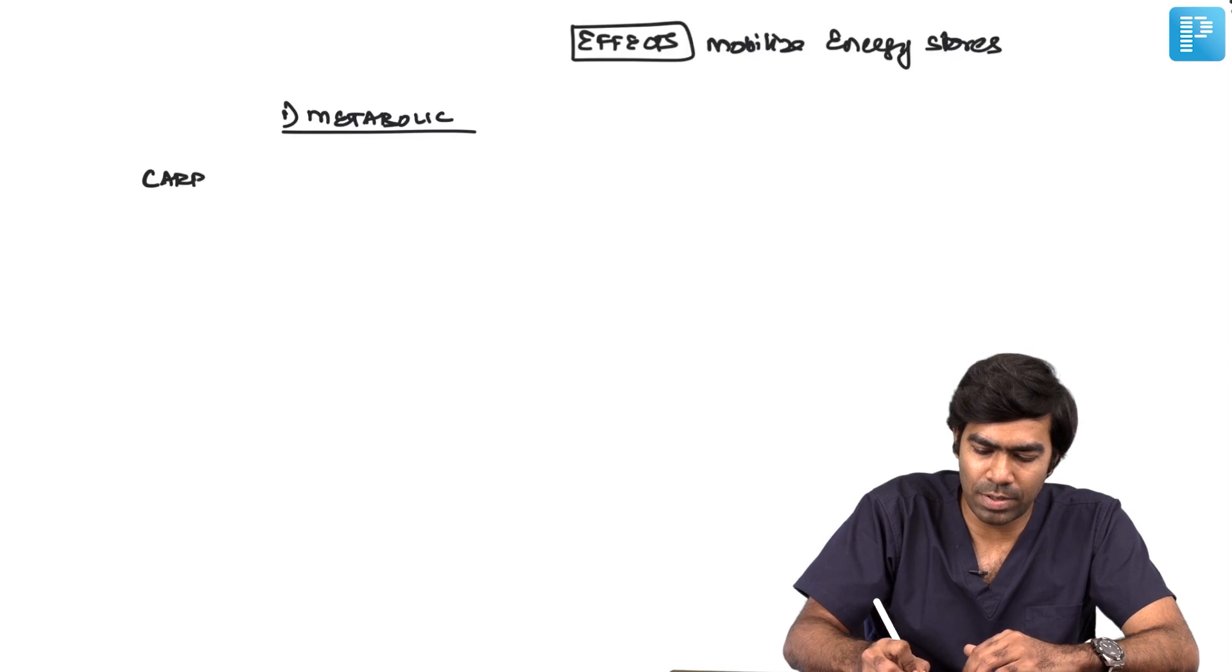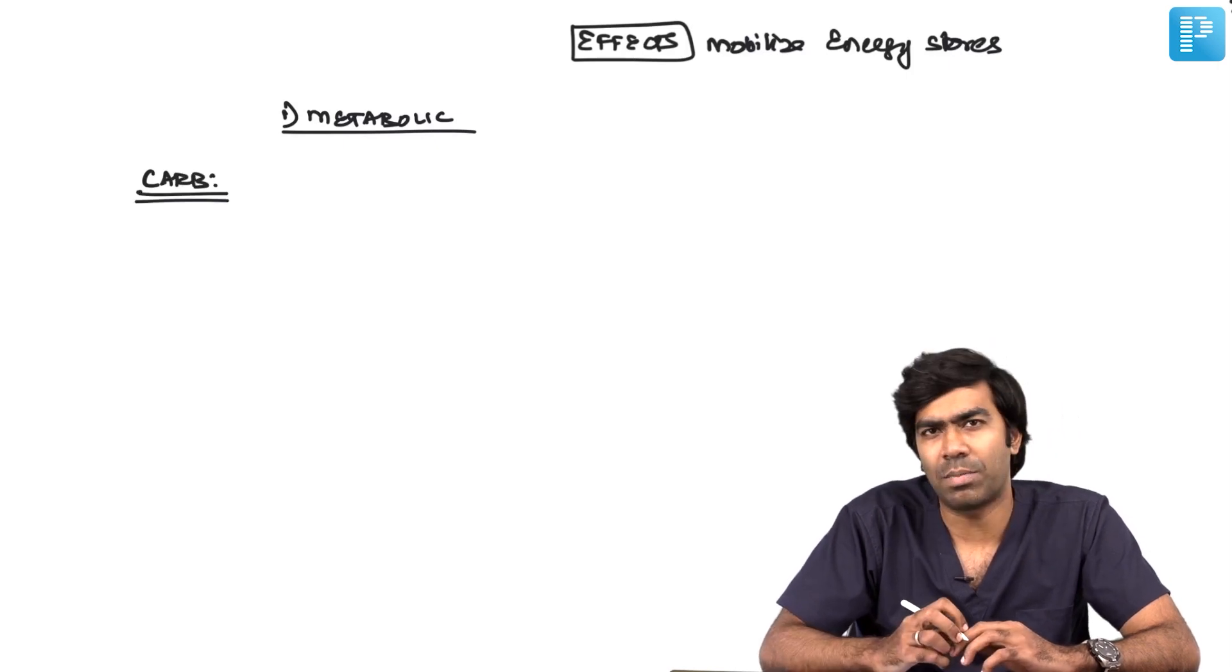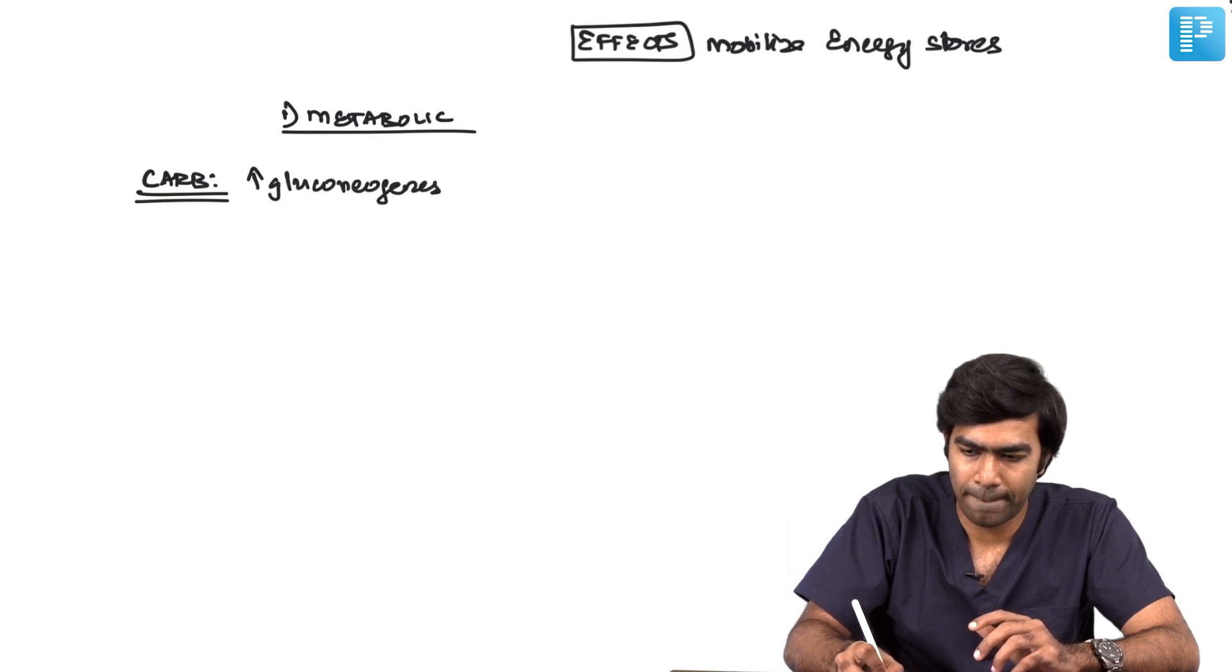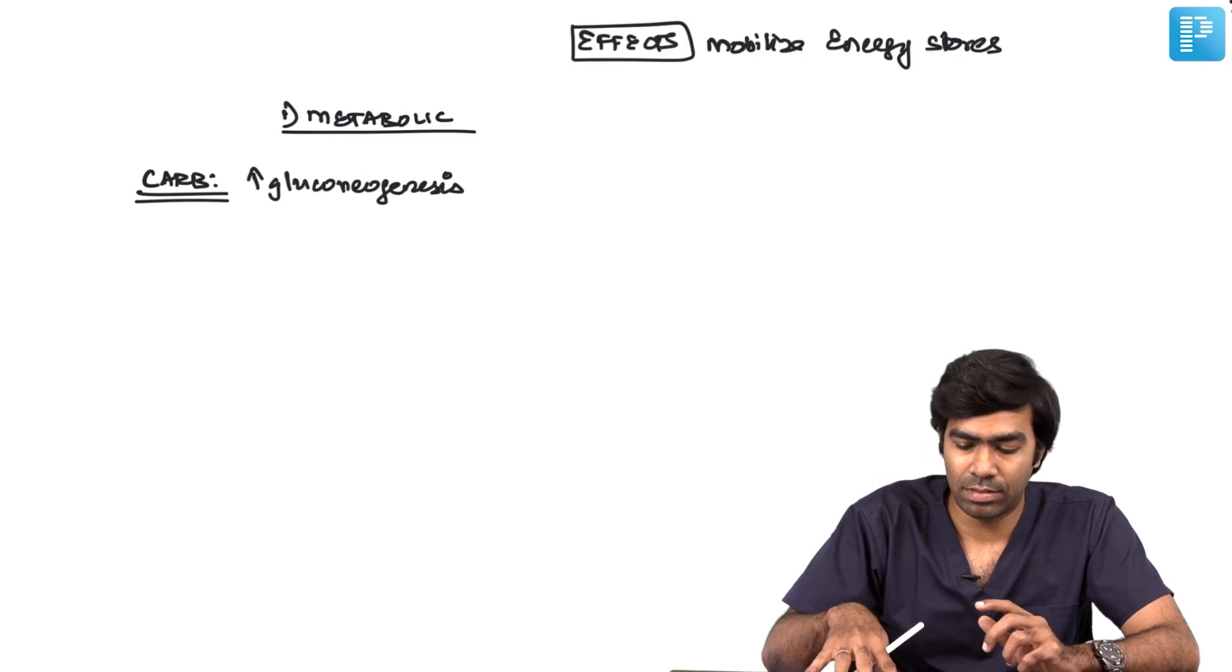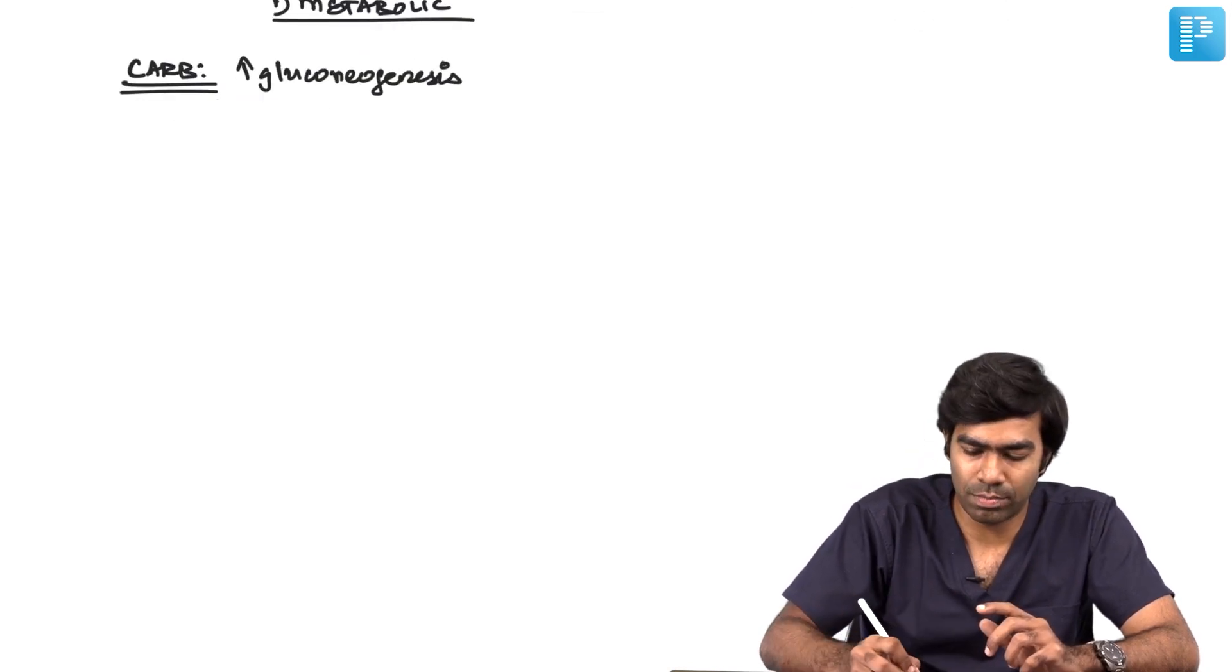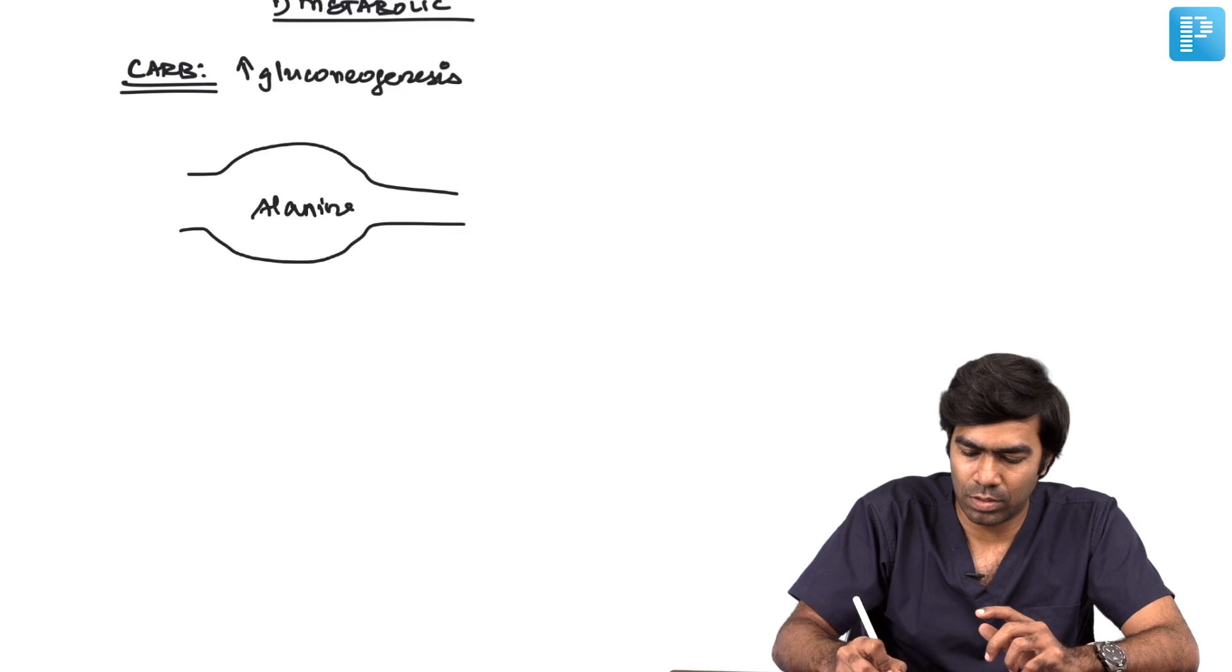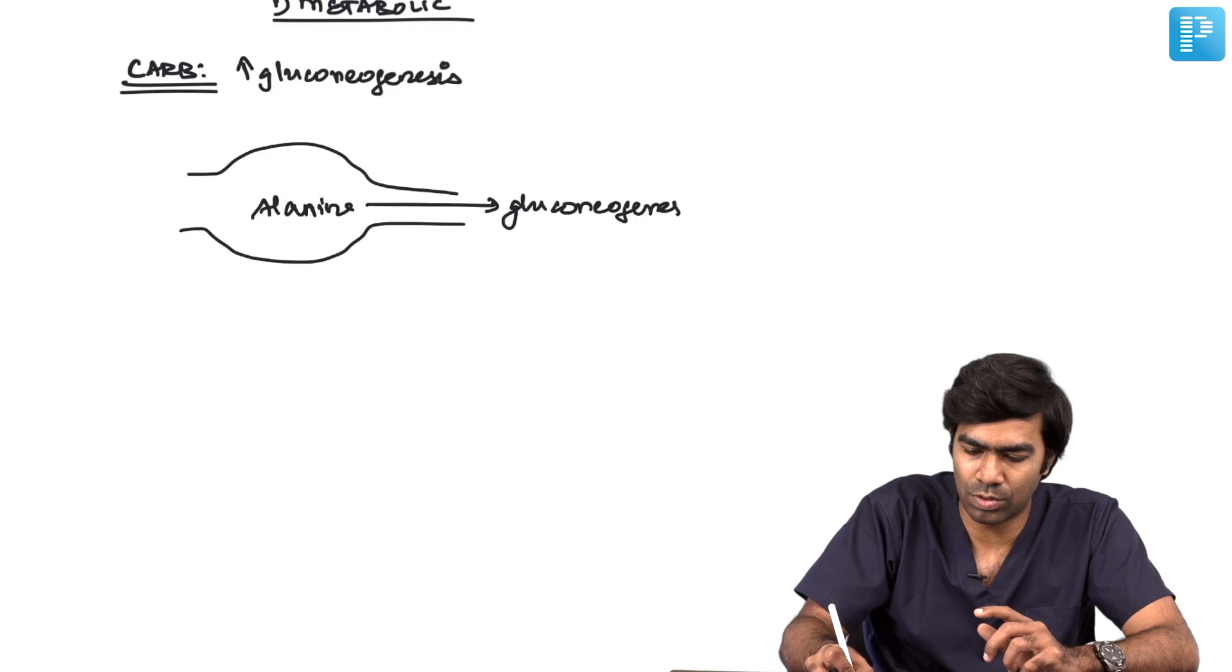Metabolic effects start with carbohydrate metabolism. They are going to increase gluconeogenesis by muscle catabolism. Your muscles have a lot of alanine, which will be shunted for gluconeogenesis, producing excessive glucose.